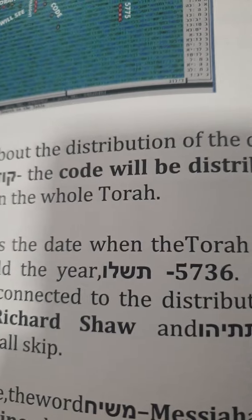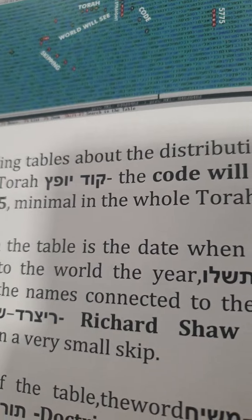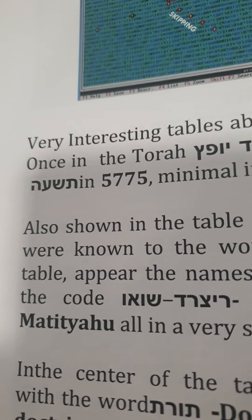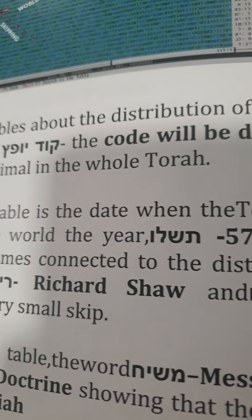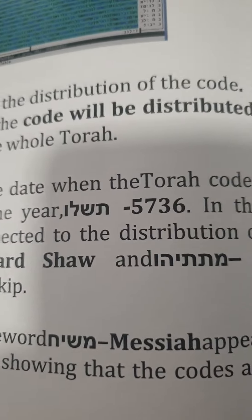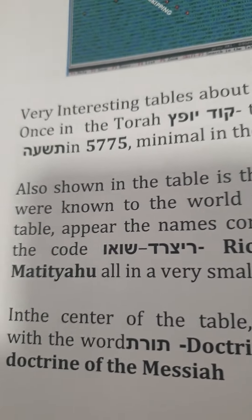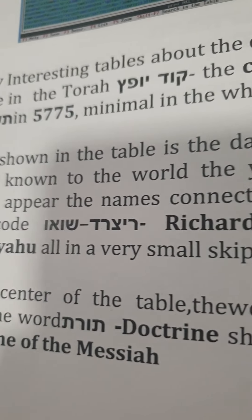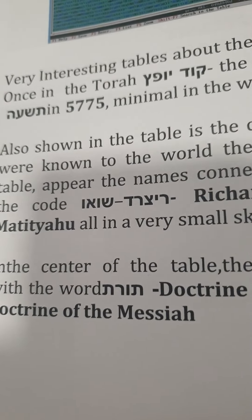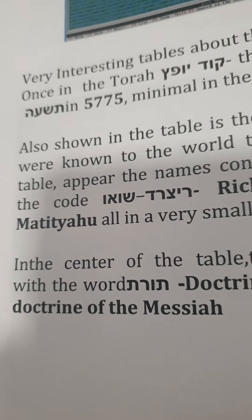Also shown in the table is the date when the Torah codes were shown to the world: 5776 (Tav Shin Lamed Vav). In the table appear the names connected to the distribution of the codes, which are Richard Shaw and Matityahu, appearing with a very small skip — the smallest in all the Torah. In the center of the table is the word Messiah, with the Torah doctrine of Messiah, showing that the codes are codes of the Messiah — Messianic codes.